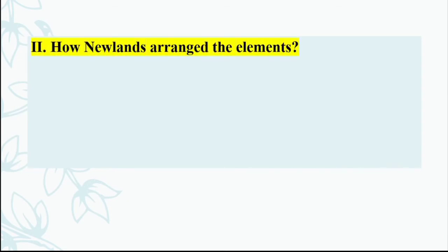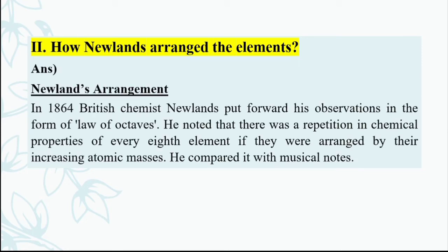Question number 2: How did Newlands arrange the elements? In 1864, British chemist Newlands put forward his observation in the form of the Law of Octaves. He noted that there was a repetition in the chemical properties of every eighth element when they were arranged in order of increasing atomic masses.